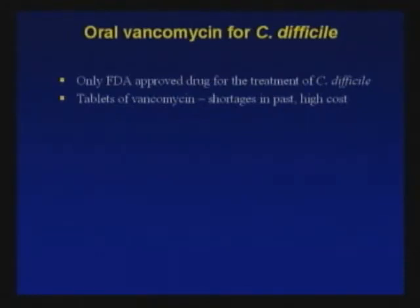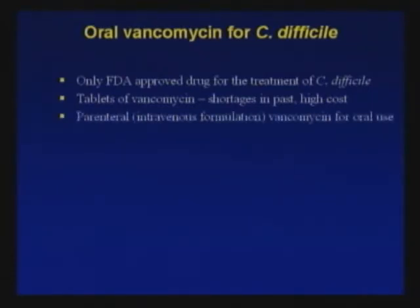Oral vancomycin is actually the only FDA-approved drug for C. difficile treatment. When you get pushback from insurance carriers, just let them know this is an FDA-approved drug that they have to work with. The major problem has been that we have a single supplier of vancomycin tablets, and there have been shortages in production over the past several years. The cost is absolutely horrific — about $1,300 for a two-week course. However, we have an effective alternative: the intravenous form of vancomycin can be ingested orally, and a hospital-based pharmacy can provide a two-week supply at roughly a 15-fold decrease in cost, with the same efficacy as the pills.